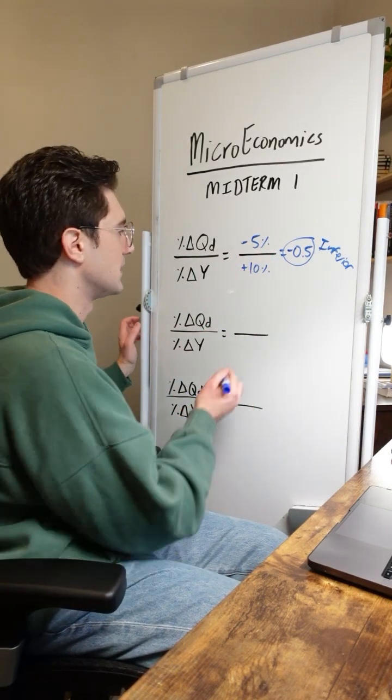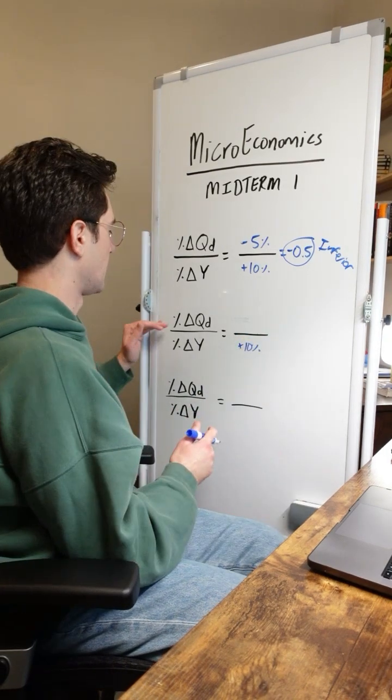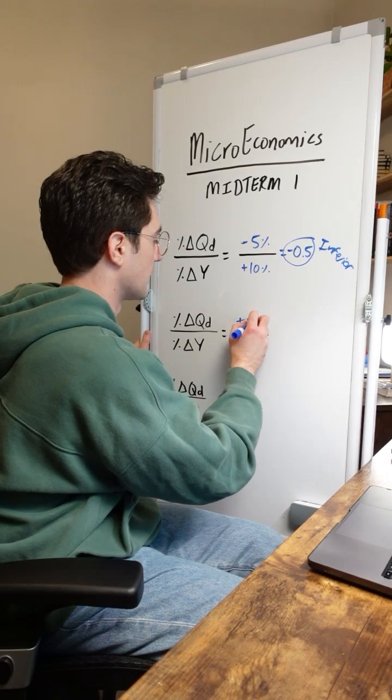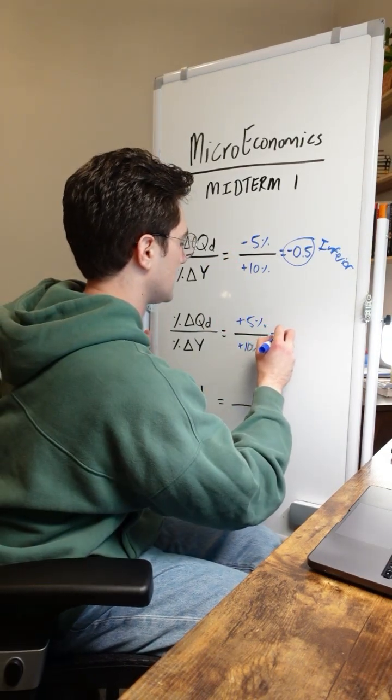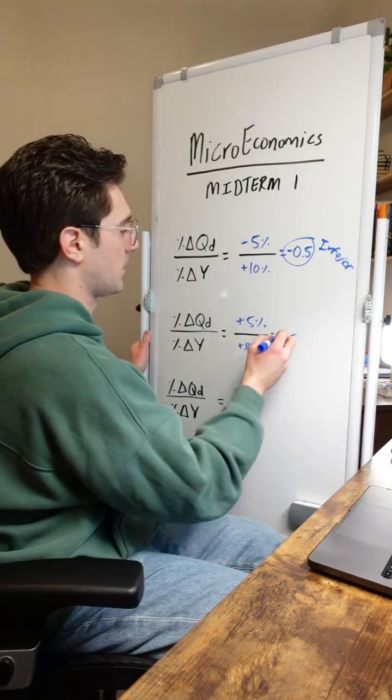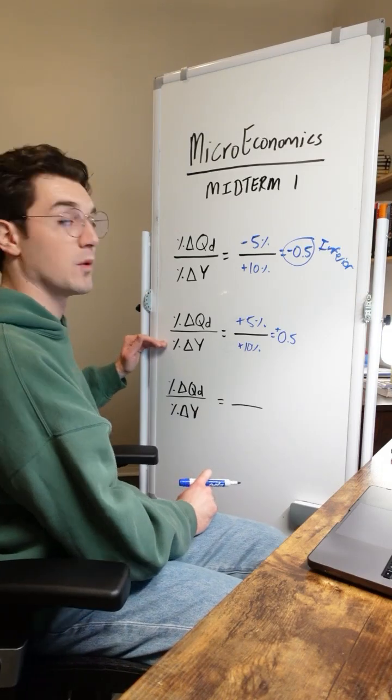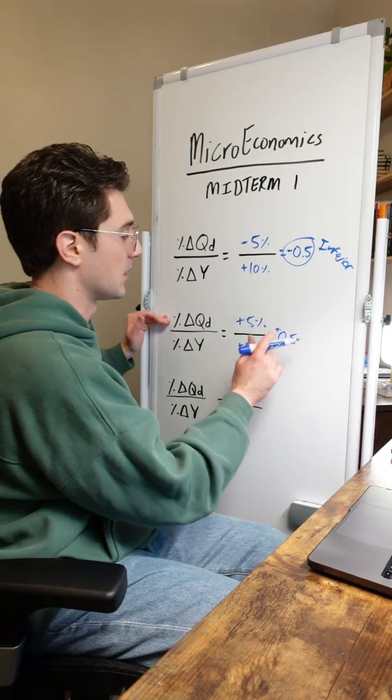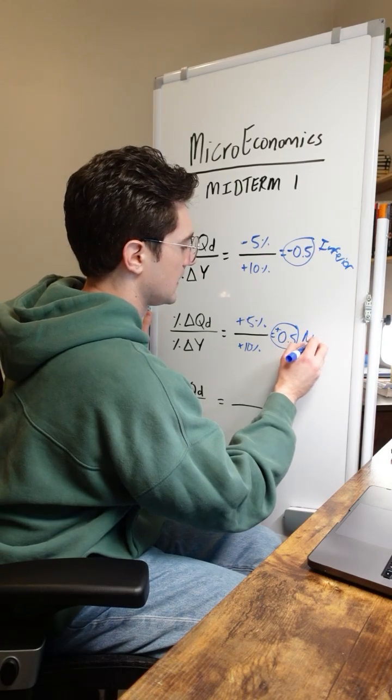Let's say that our income is again increasing by 10%. When that happens, the quantity demanded of the good increases by 5% instead of decreases. This results in an income elasticity of demand value of positive 0.5. In other words, when our income increases by 1%, the quantity demanded of the good increases by 0.5%, indicating that this is a necessity good.